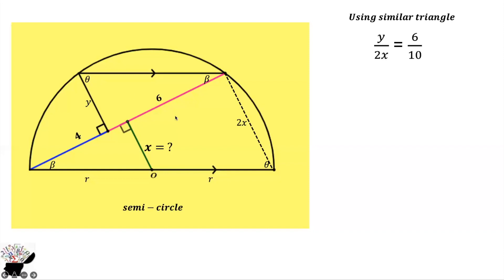Now for theta: the line it faces is 4 plus 6, which is 10. So we have 6 divided by 10. Cross-multiplying, we can find Y equals 6X divided by 5.